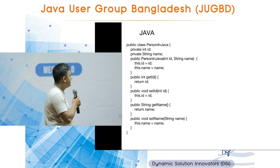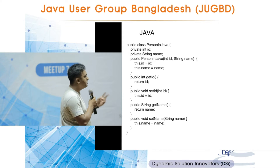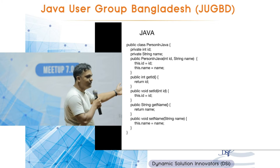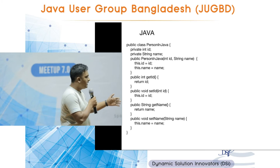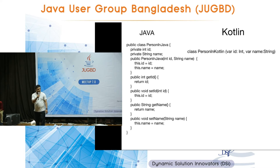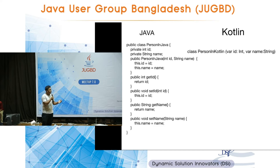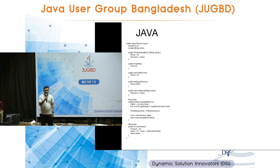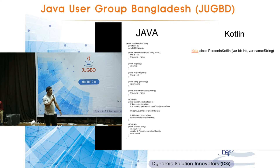Here is a simple POJO in Java with only two properties, ID and name. To access them you need a constructor, getters and setters — about 40 lines of code total for just two properties. In Kotlin it's just one line: data class Person with var id and var name. By adding the data keyword at the beginning of the class, you automatically get toString, hashCode, equals, and all those functionalities.